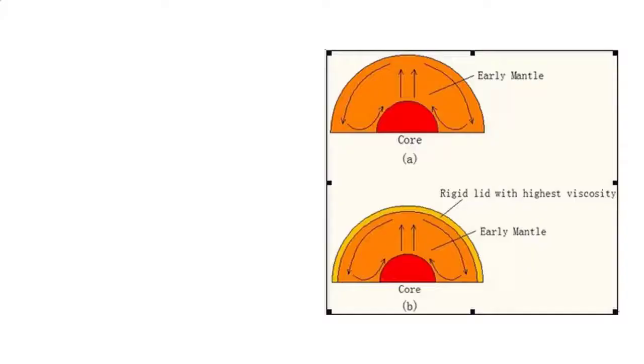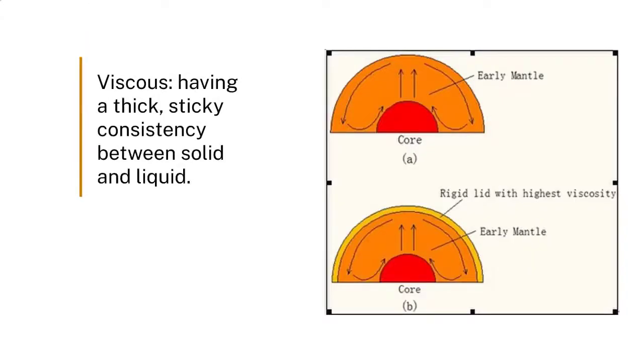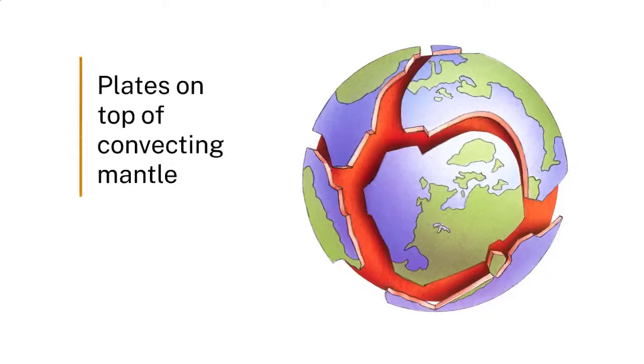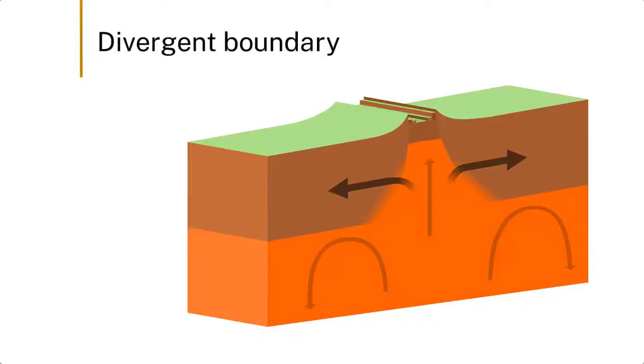We're talking about plate tectonics — the all-encompassing model that explains most of the surficial processes on Earth. In this model we have a viscous flowing mantle, which is convecting, and on top of that we have crustal material which is moving around. We have places where we're making oceanic crust, and we call it a divergent boundary because the crust is diverging.